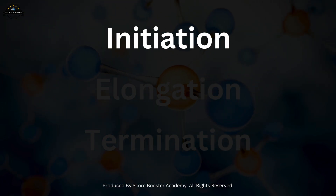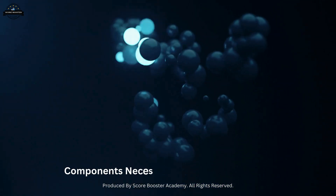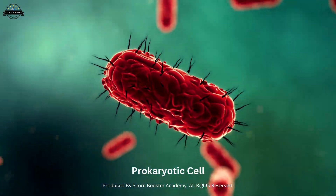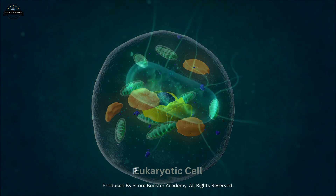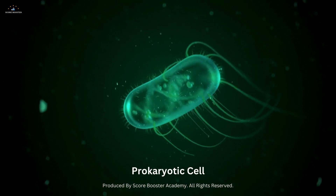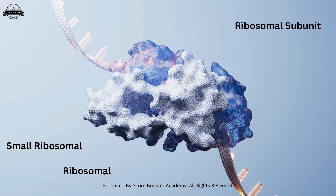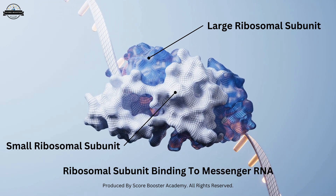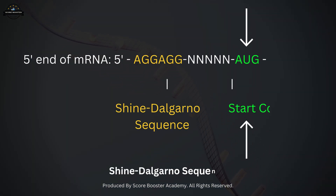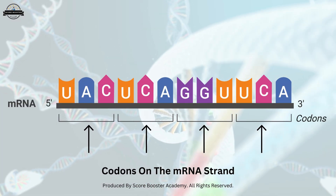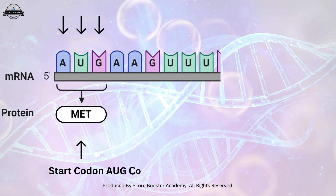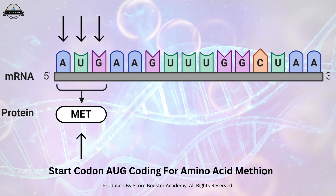Let's start with the initiation phase. Initiation is the beginning phase where the components necessary for protein synthesis come together. This phase is slightly different between prokaryotes and eukaryotes. In prokaryotes, the process of initiation begins when the small ribosomal subunit binds to the messenger RNA. This critical binding occurs at a specific nucleotide sequence known as the Shine-Dalgarno sequence, which is strategically located just upstream of the start codon, typically AUG. A codon is a sequence of three bases on the mRNA that specifies one amino acid. The start codon AUG codes for the amino acid methionine, marking the beginning of the protein synthesis process.